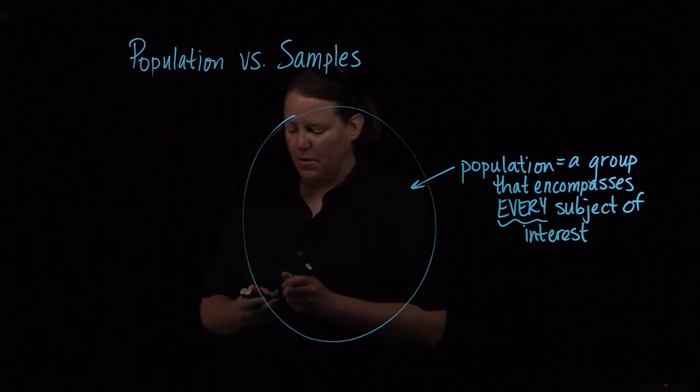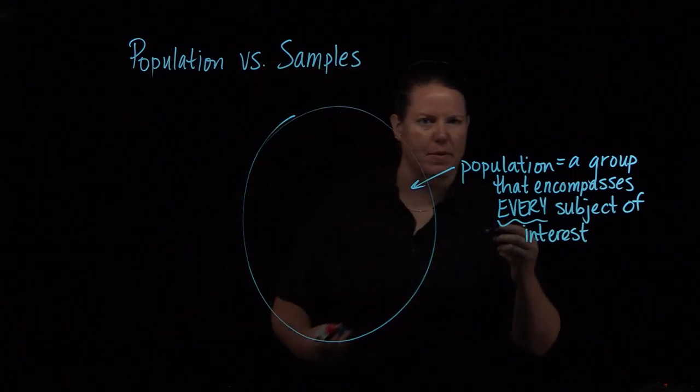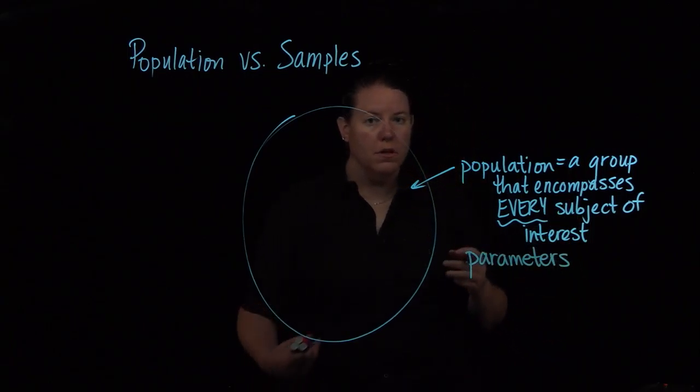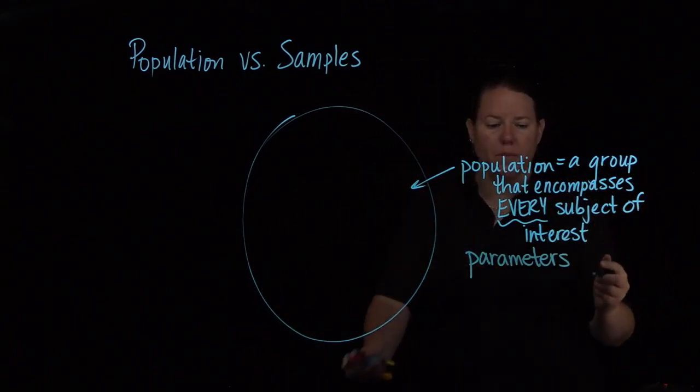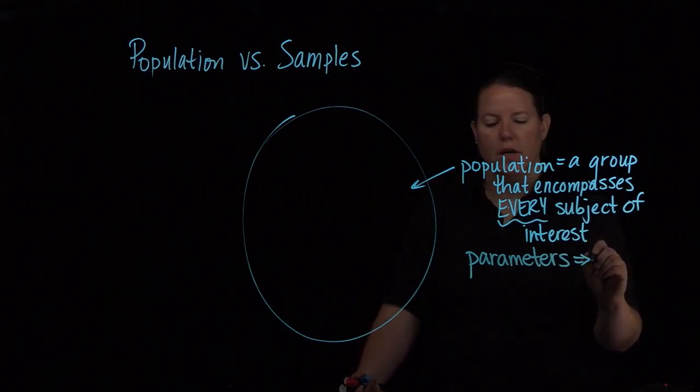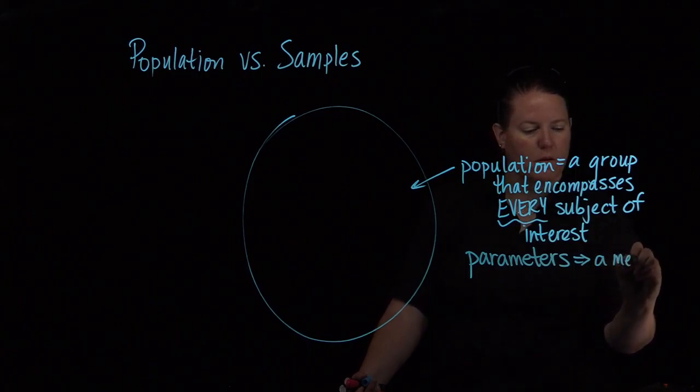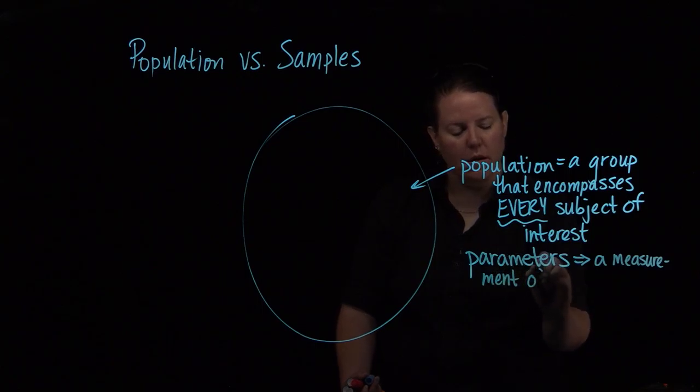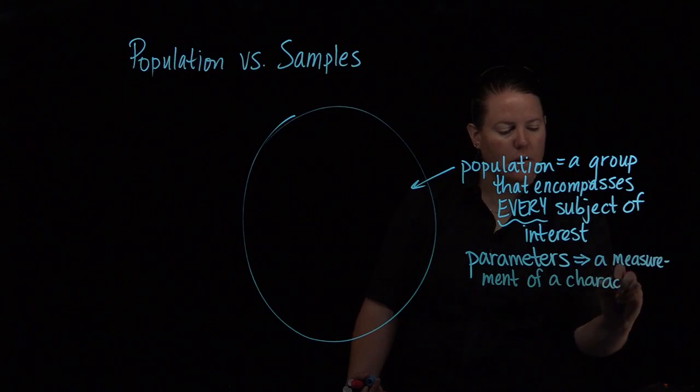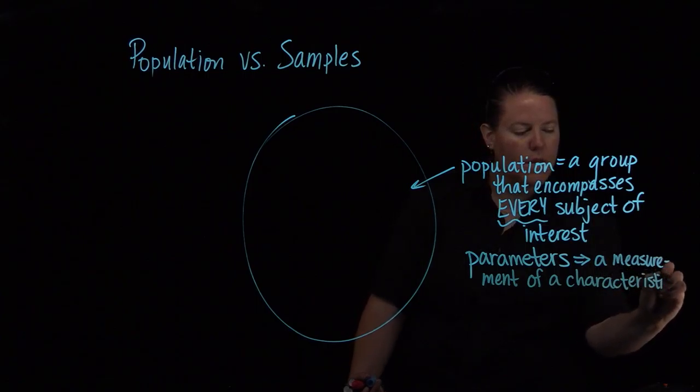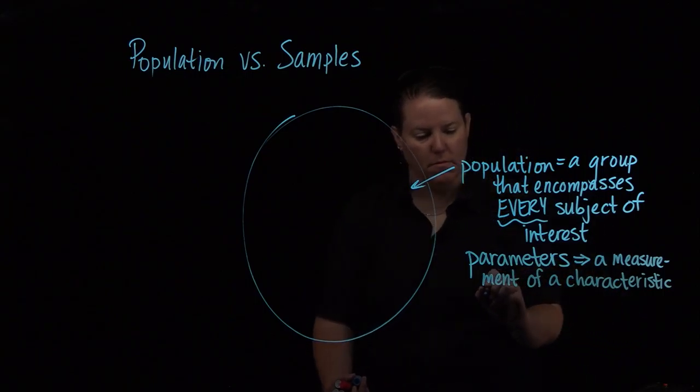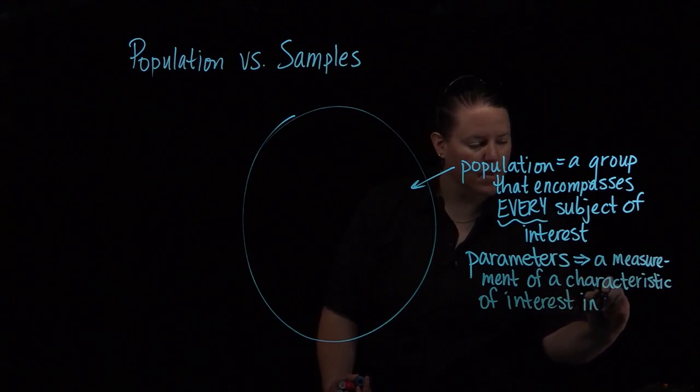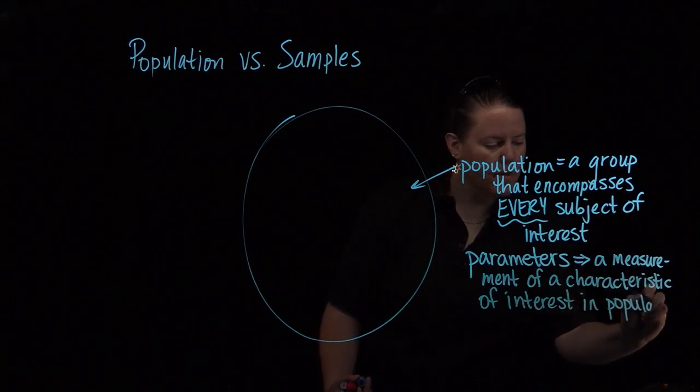That is very different from, let me finish that thought about population. We use parameters to describe some characteristic of this population that we want to measure. So this is a measurement of a characteristic that we're interested in for the entire population.